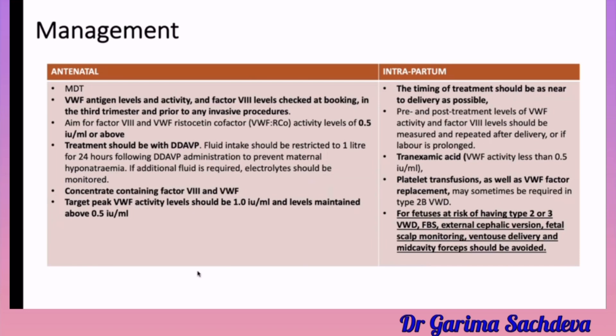Treatment is initiated when the von Willebrand factor level is less than 0.5. You give desmopressin, recombinant factor 8, or von Willebrand factor concentrate, and tranexamic acid can also be used. Replacement is continued until the factor level reaches 1.0.